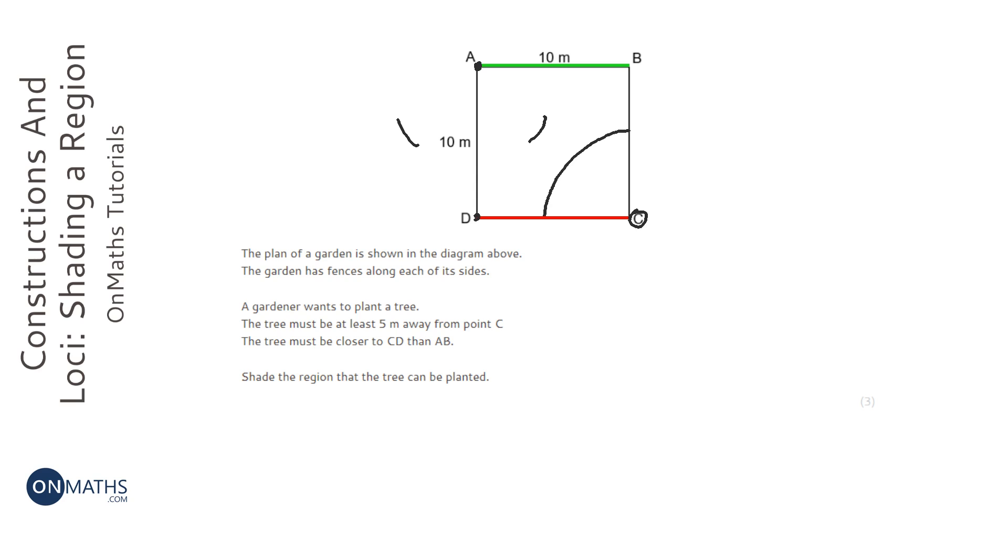You do the same at D, and you do a bit of the circle this side and a bit of a circle this side. And then you join those up, so I'm going to join those up and just keep going like so. Now that will give you a perfect equidistant line from AB and CD.